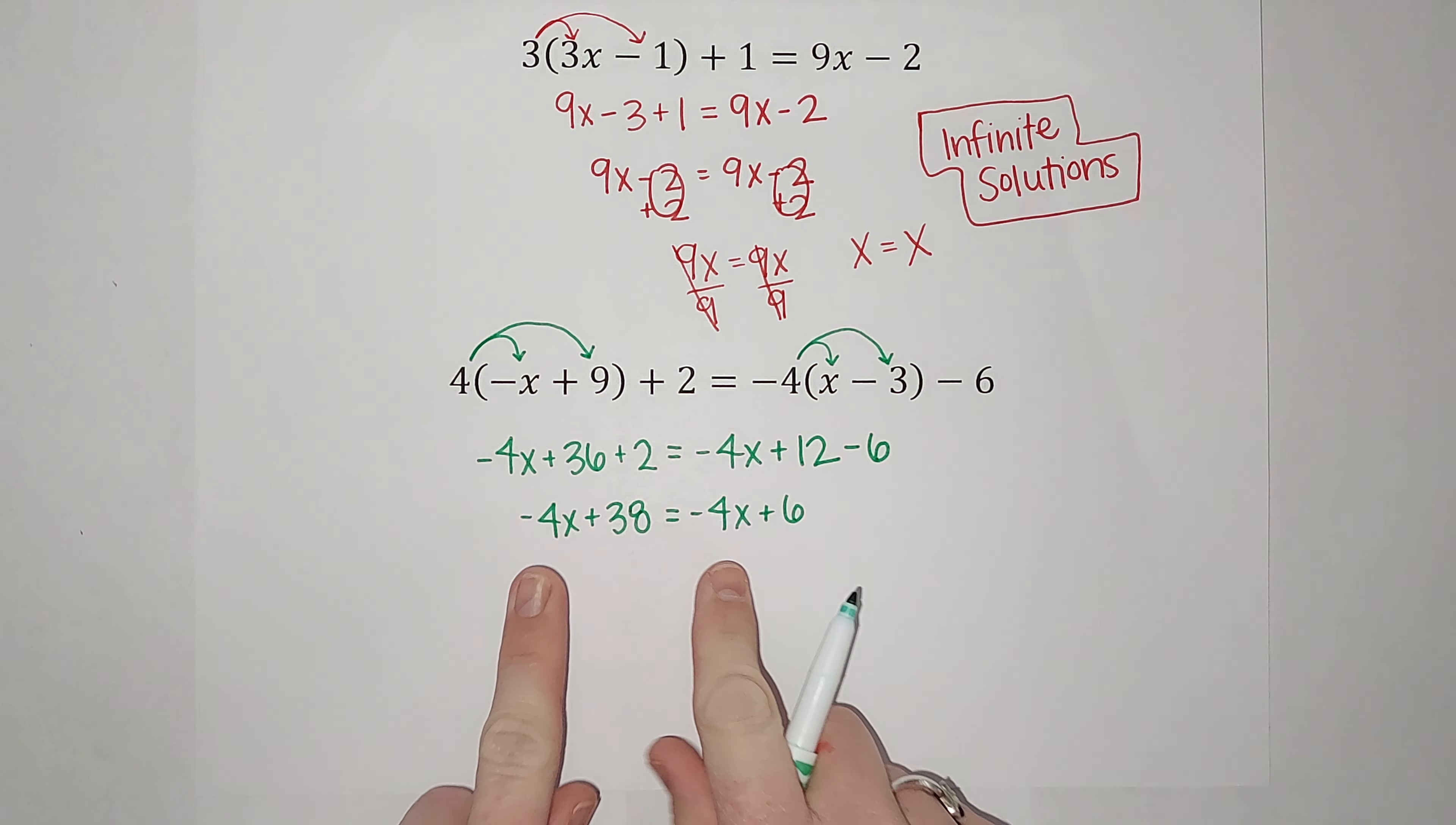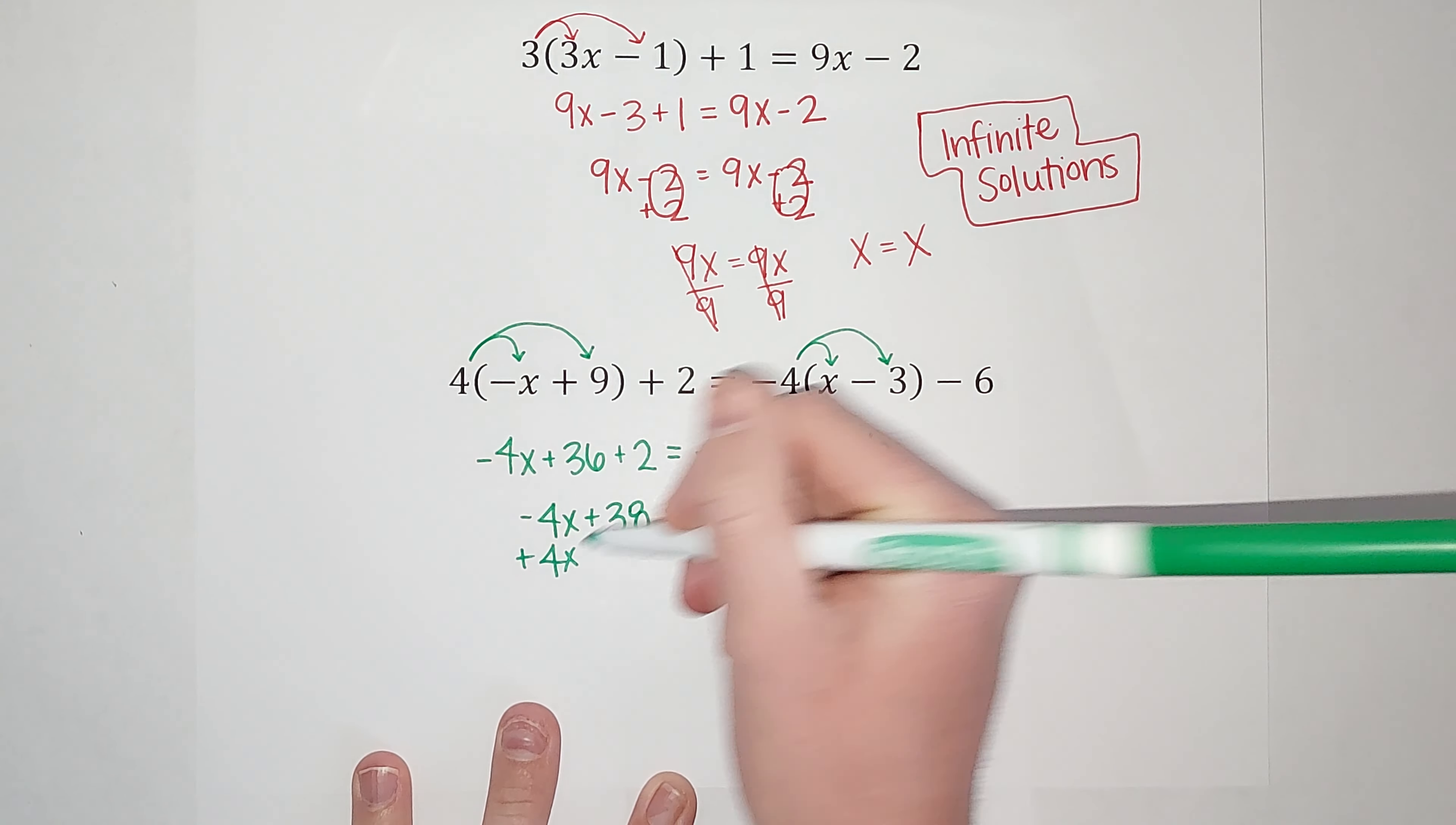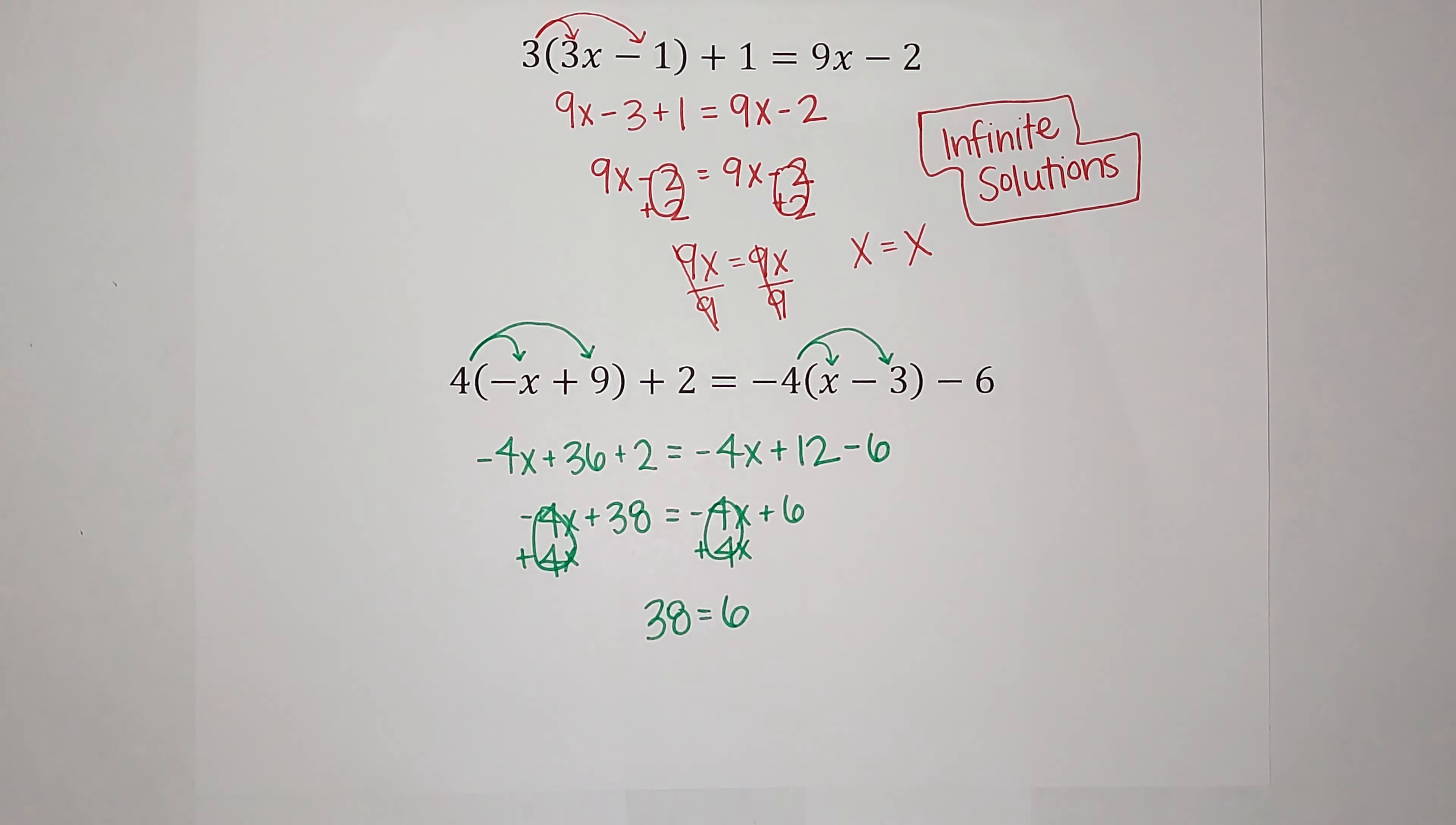So now, I'm starting to notice something funny here. Because I notice if I add 4x to both sides to try to get my x's together. Uh-oh, they're going to cancel. And I'm going to be left with 38 equals 6. Which, last time I checked, is not true, right?